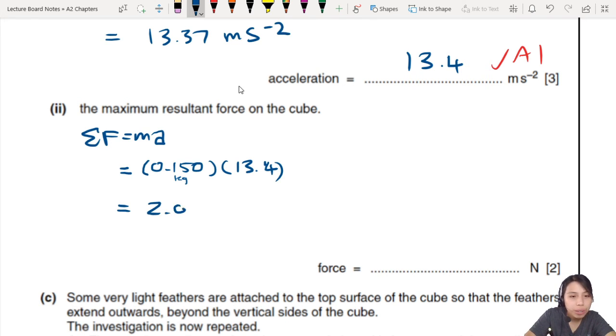So, let's use 13.4. And you get 2.01 newton, which is also 2.0 newton. 2 mark. Very generous leh. One here. One here. Okay.